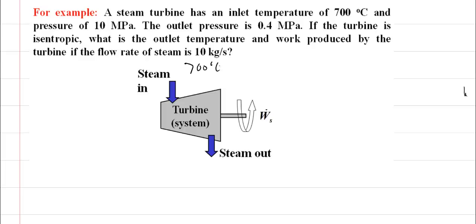An inlet pressure of 10 megapascals and an outlet pressure of 0.4 megapascals, but we don't know what the outlet temperature is. We're using the information that the system is isentropic to actually get this outlet temperature.